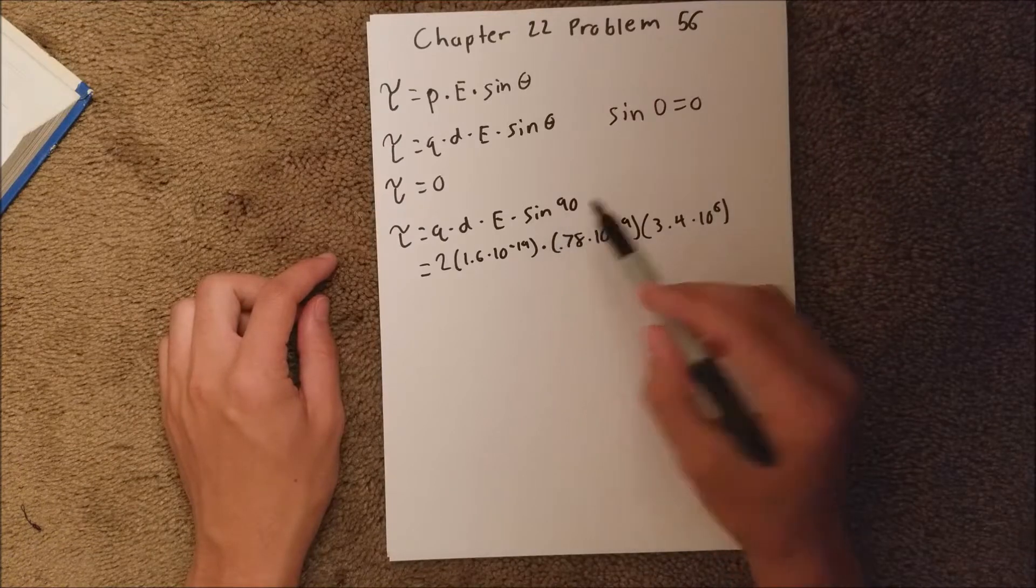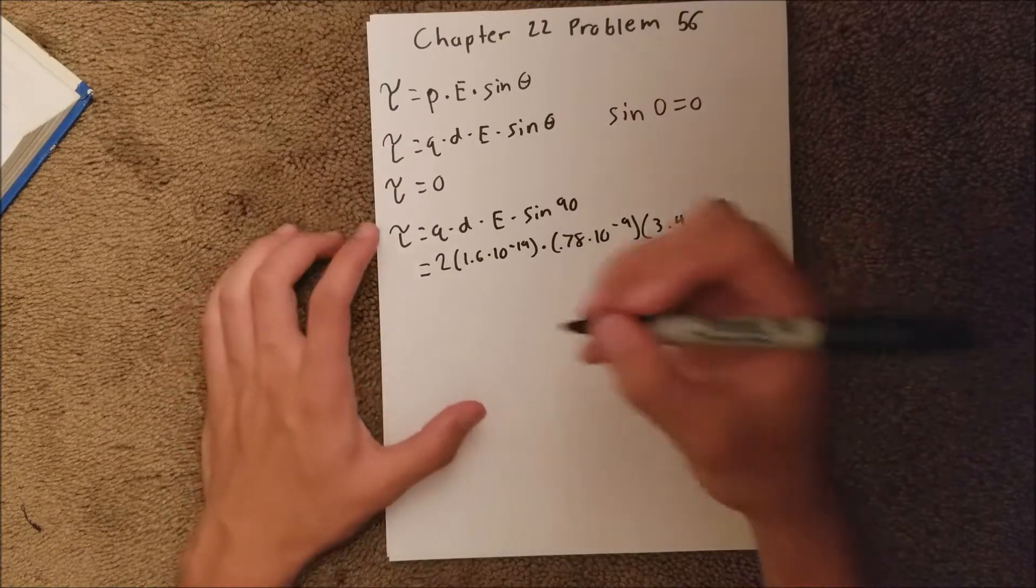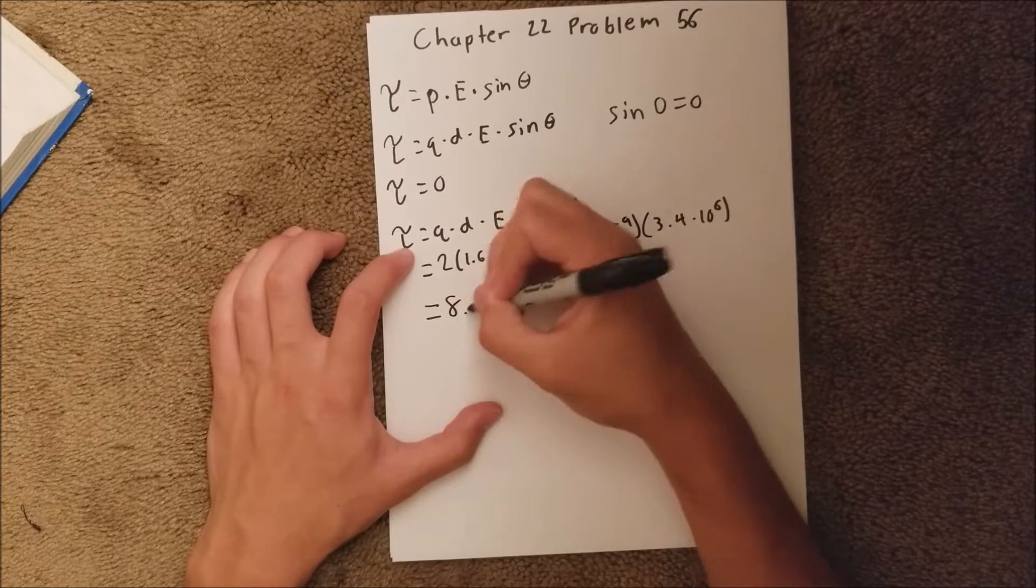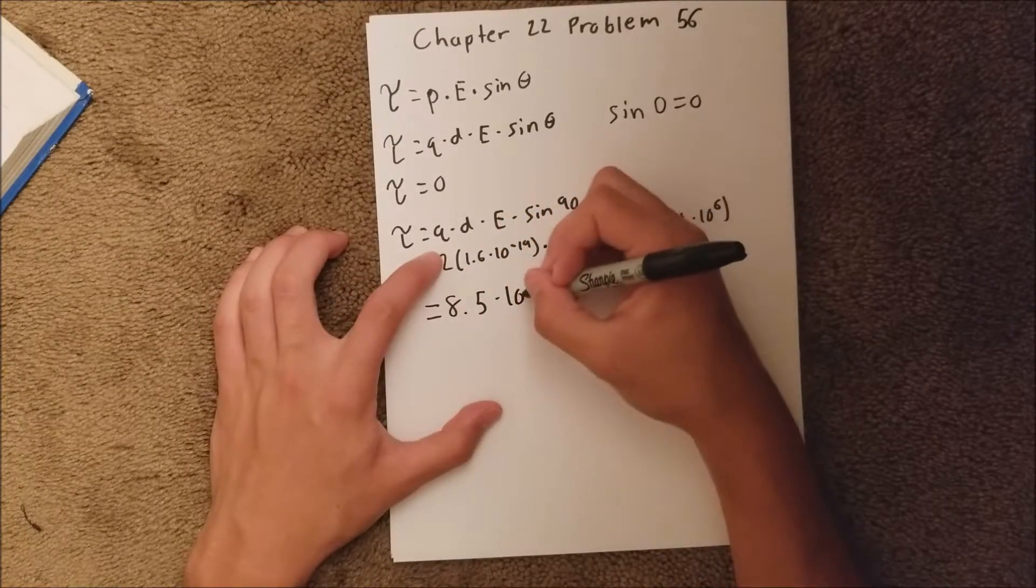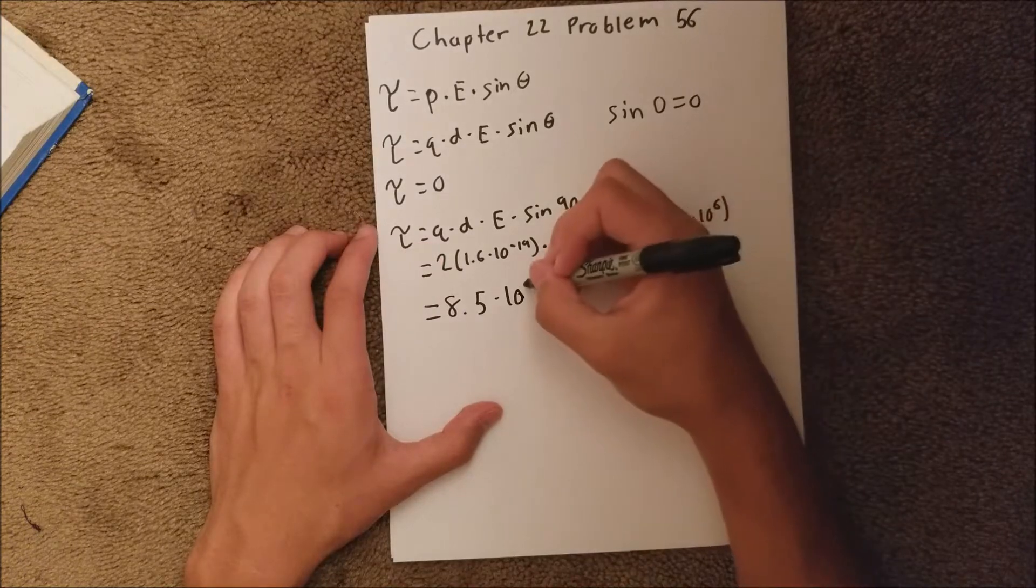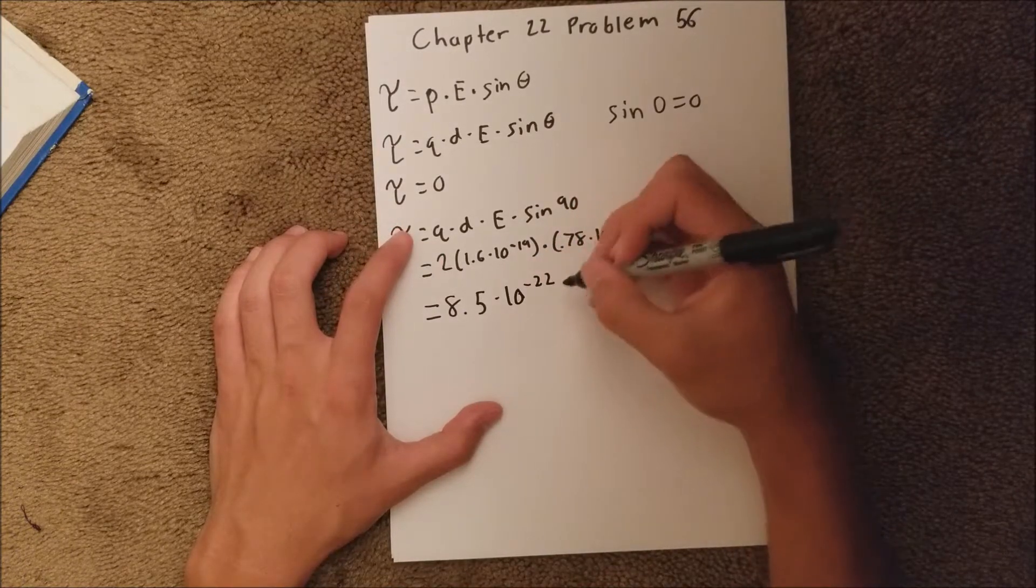And then times the sine of 90, which is just 1. So when you put all that into your calculator, you should get 8.5 times 10 to the negative 22 newton meters.